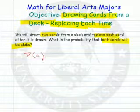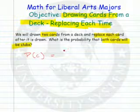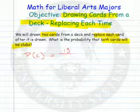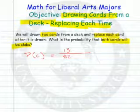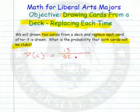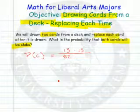For the first card to be a club, what are the possible outcomes? I could draw the first card — how many ways could I be successful? Thirteen ways. And how many possible outcomes are there? Fifty-two. Now I replace that card again and I draw again. I draw a club — how many ways could I be successful? Thirteen ways. And how many outcomes are there? Fifty-two outcomes this time.